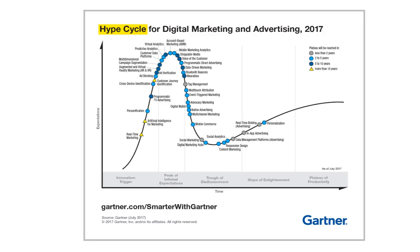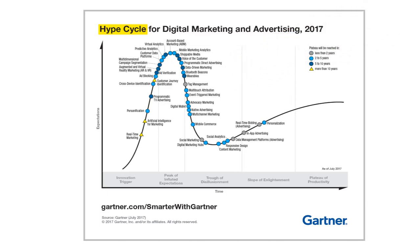For example, in the figure that we see, Gartner's hype cycle for digital marketing and advertising shows 30 plus technologies. The hype cycle example diagram that we see here is normally included as part of a much more detailed report which Gartner issues to its client members only and is not available in the public domain. We'll cover the contents that are included in that report a little later in the presentation.